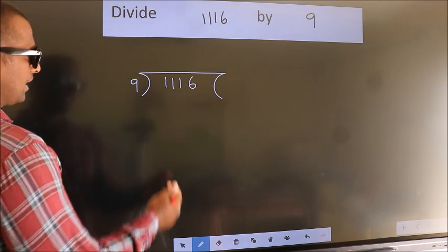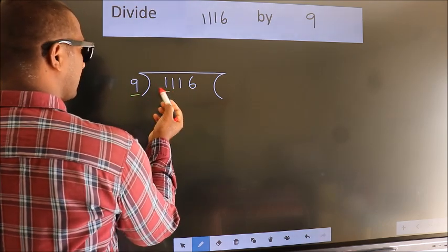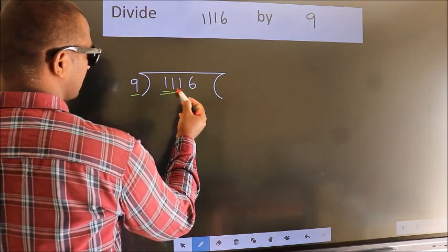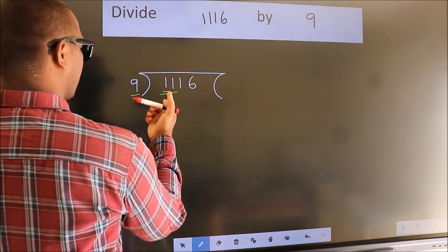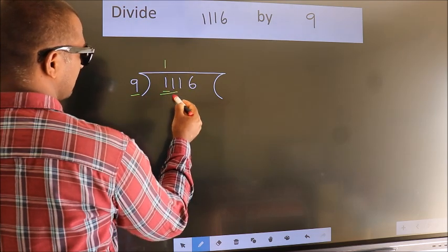Next. Here we have 1, here 9. 1 smaller than 9. So we should take 2 numbers, 11. A number close to 11 in 9 table is 9 ones, 9.